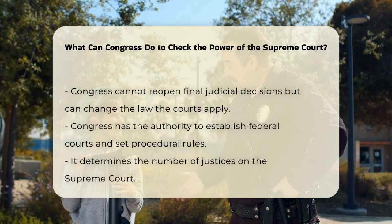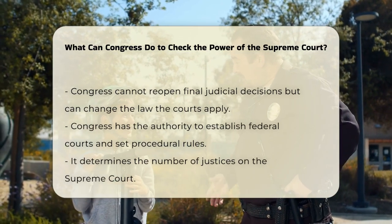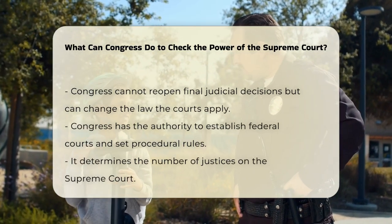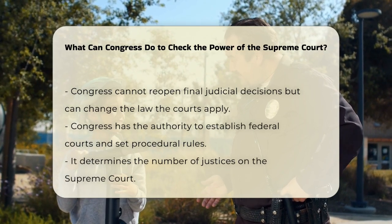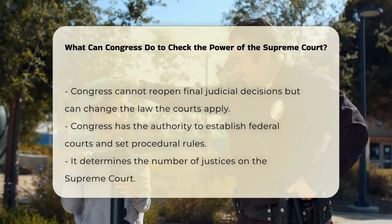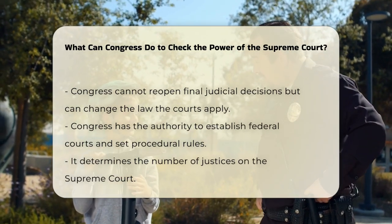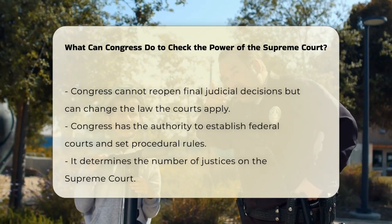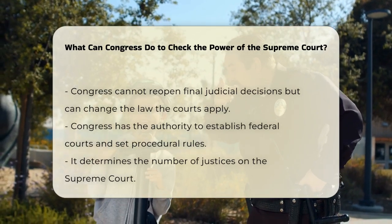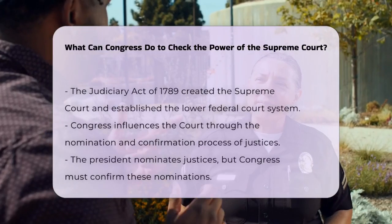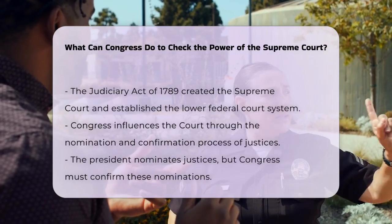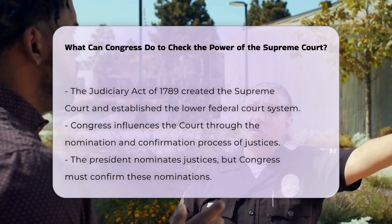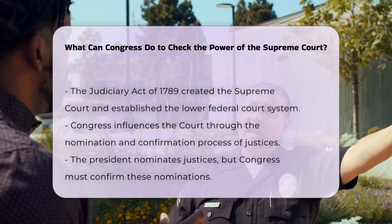Congress also has the power to establish federal courts and set their procedural rules. This includes deciding how many justices will be on the Supreme Court and organizing the lower federal court system. For example, the Judiciary Act of 1789 created a Supreme Court with six justices and established the lower federal court system.